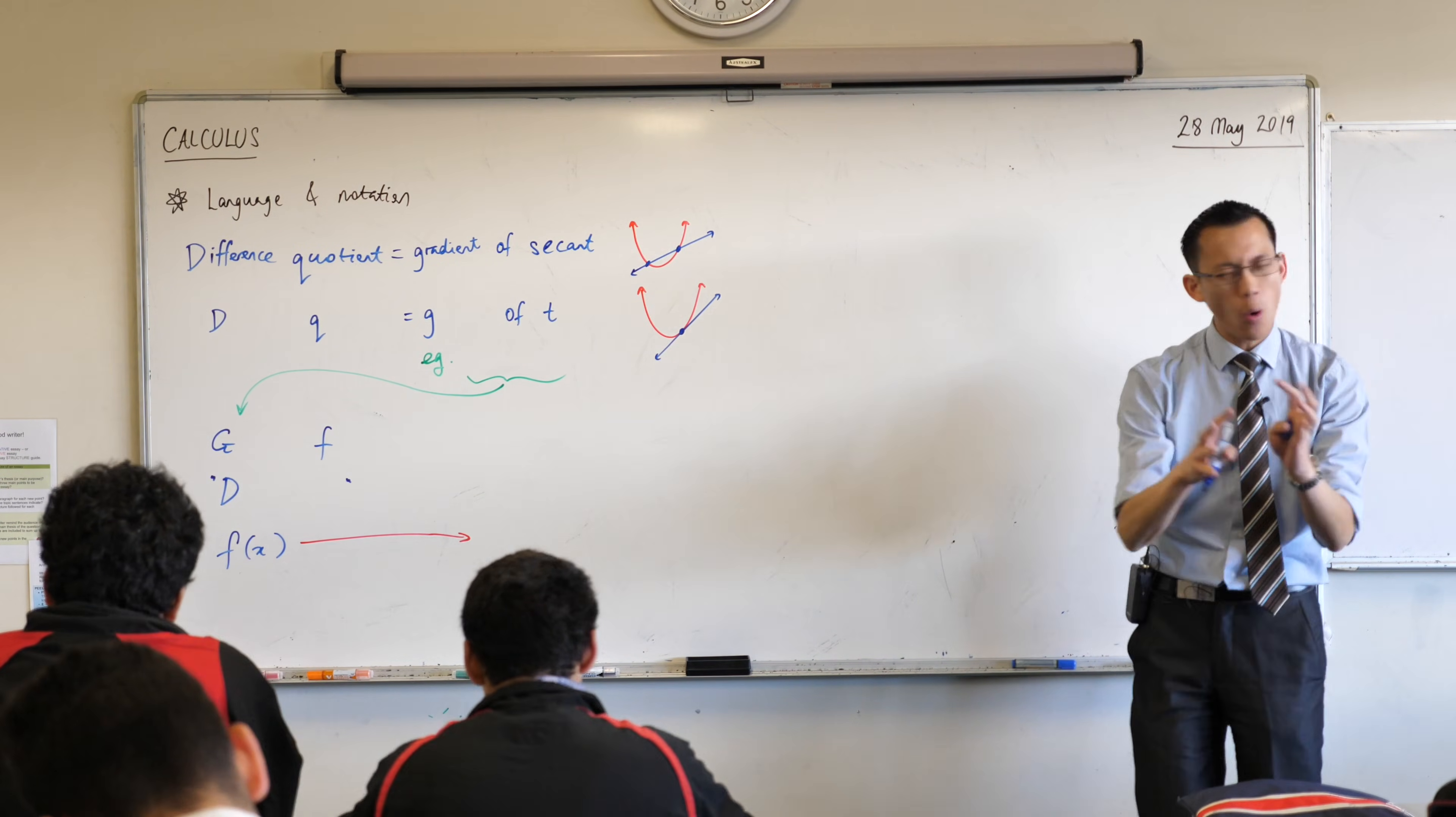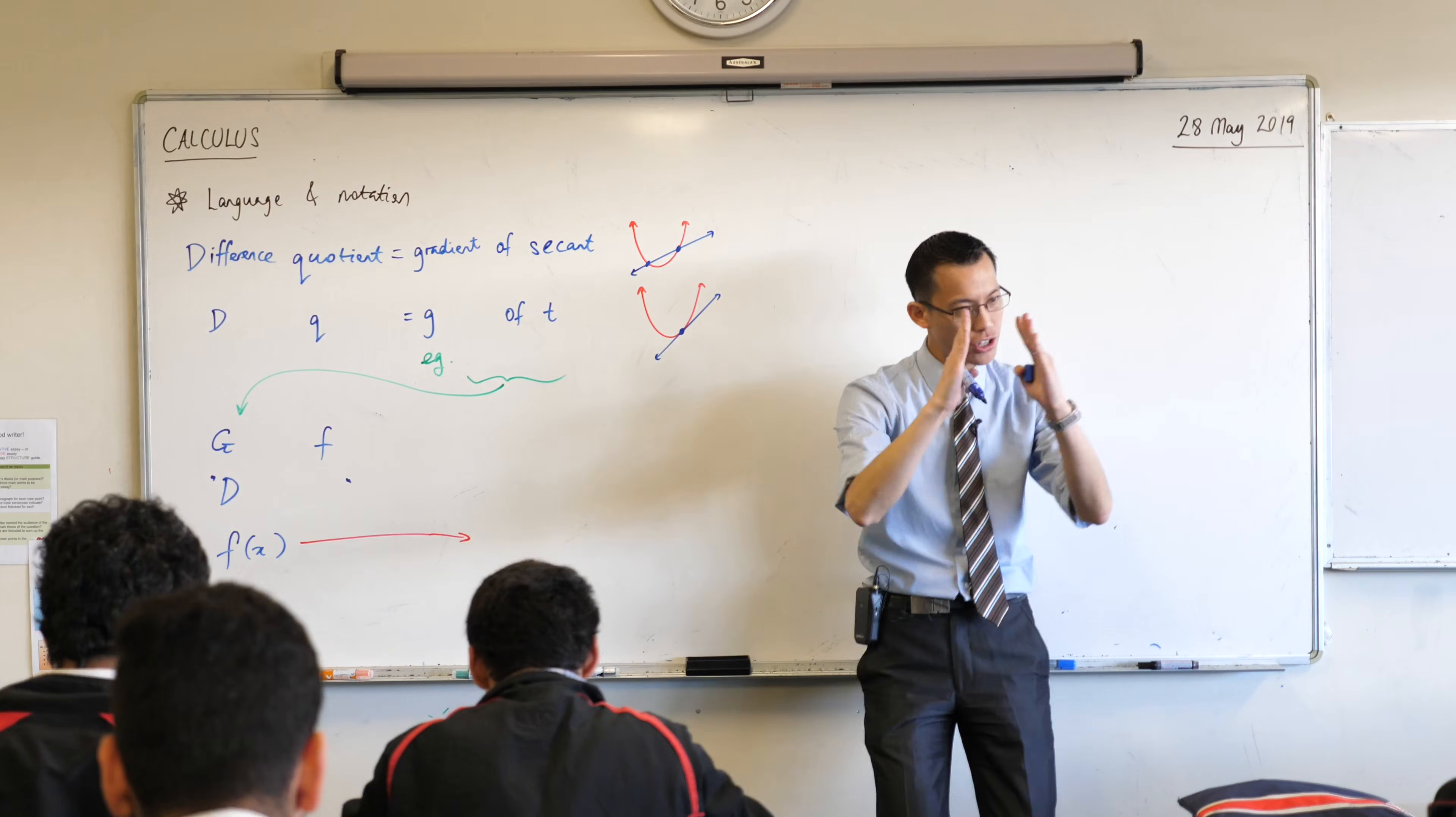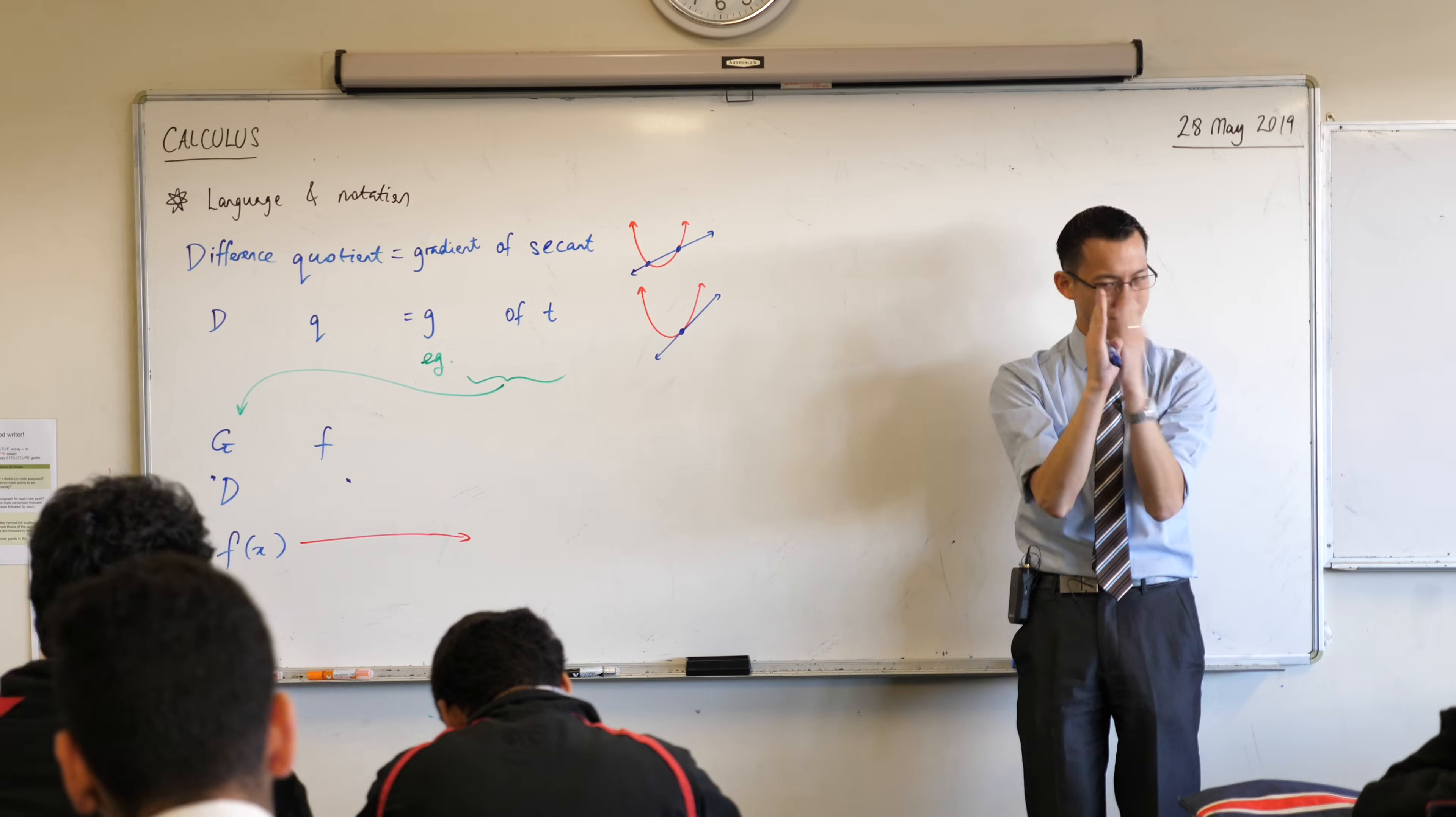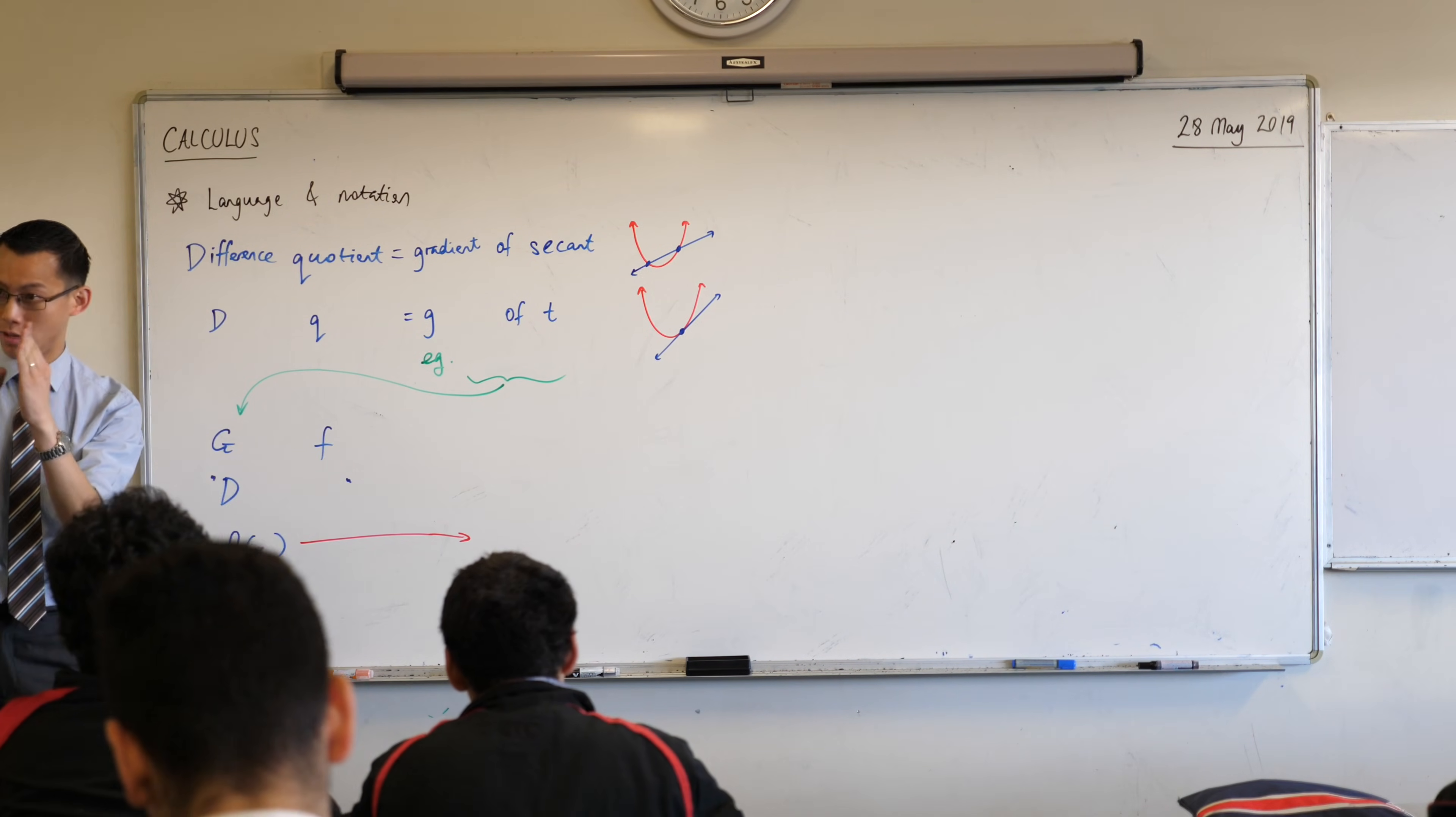which were h units apart horizontally, and we said, what if you compressed that h into, like, zero? What if you said those two points were not separate, but the same?